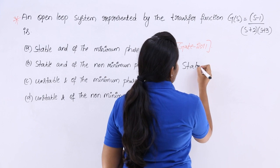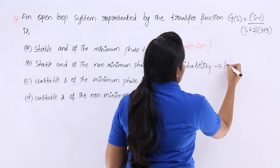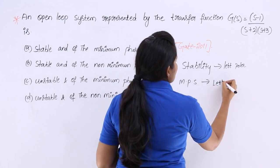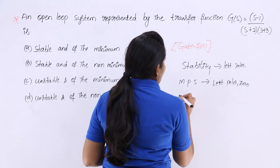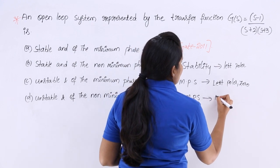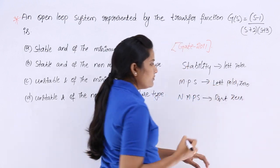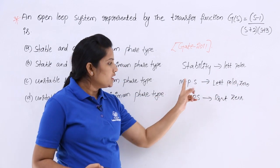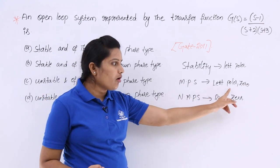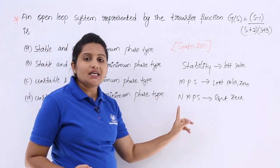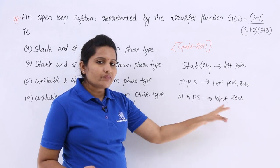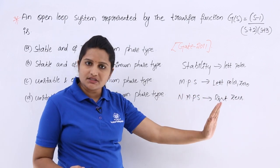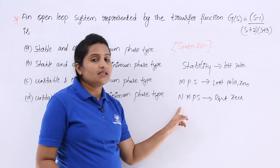Otherwise, if zeros are shifted to the right half of the s-plane, then that is said to be a non-minimum phase system. So, stability depends upon left-sided poles. Minimum phase system depends upon left poles and zeros. Non-minimum phase system depends upon right zeros. These three are very important points. When checking minimum phase system, you need to verify that all poles and zeros are on the left side. When checking non-minimum phase system, at least one zero must have crossed the j-omega axis and gone to the right half.